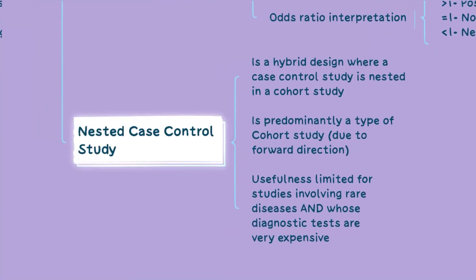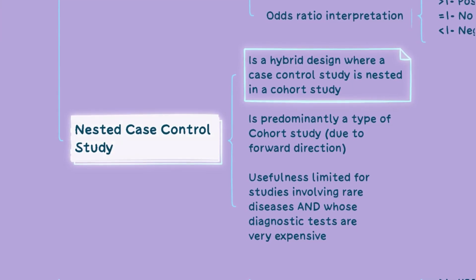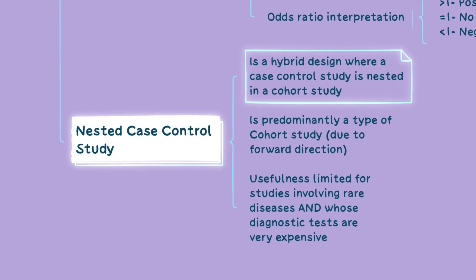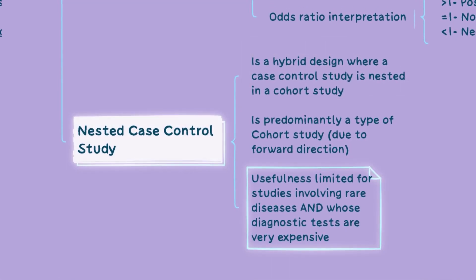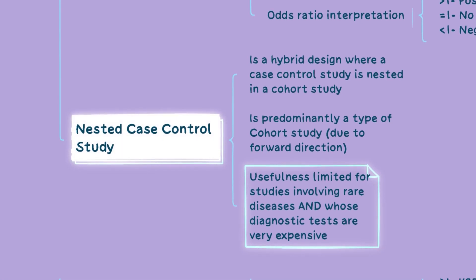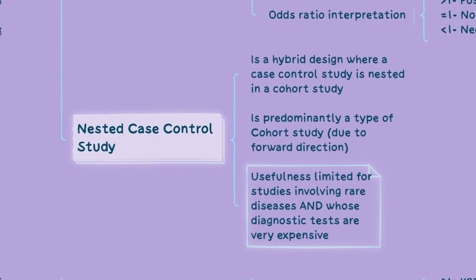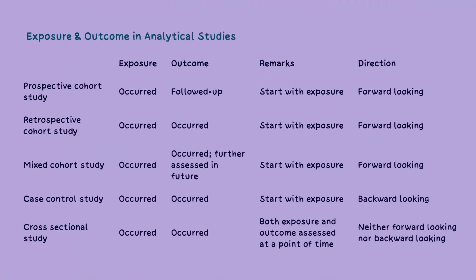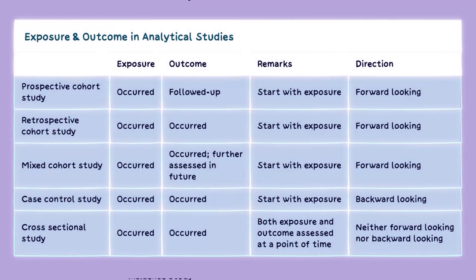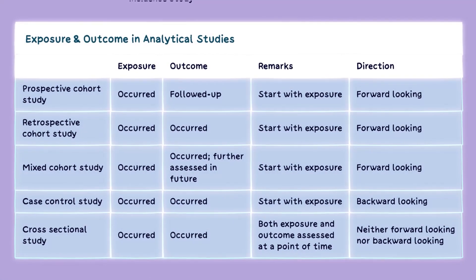There are some important differences between relative risk and odds ratio, which you can note from this table. A subtype called the nested case-control study is a hybrid design where a case-control study is nested in a cohort study. Its usefulness is very limited and is not often used, apart from in the case of rare diseases. For a quick revision of analytical epidemiology, you can take a look at the table denoting the relationship between outcome and exposure in various studies.